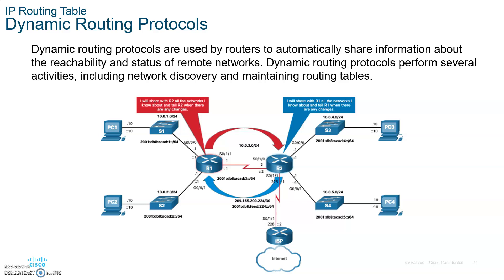Dynamic routing protocols allow routers to communicate with each other to build their own routing tables. RIP2 and EIGRP are called distance vector routing protocols — they build their routing tables from information received from directly connected neighboring routers. OSPF, on the other hand, is a link state protocol. The difference is that link state protocols like OSPF learn and build routing tables from all routers in the area, not just neighbors.